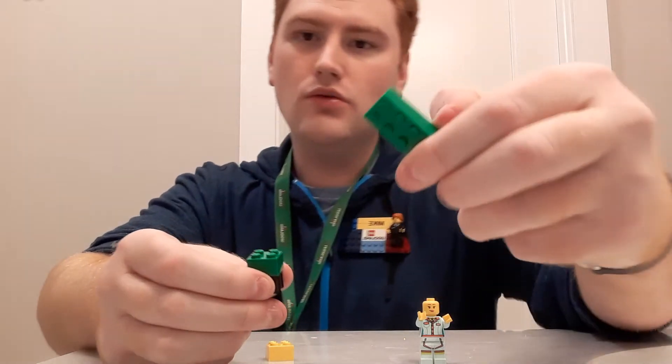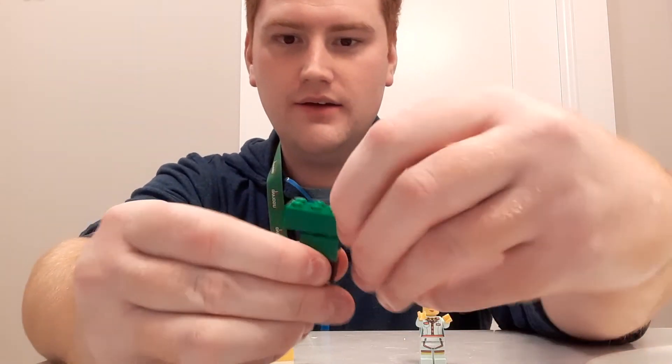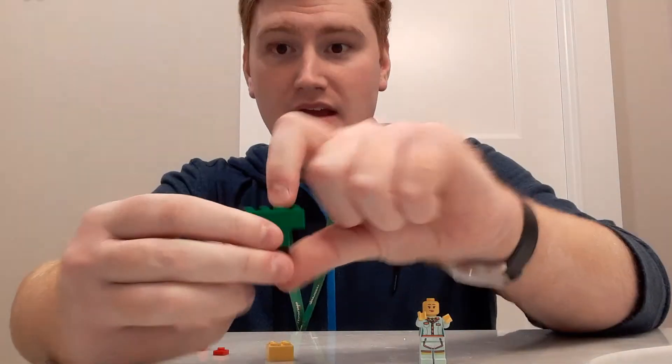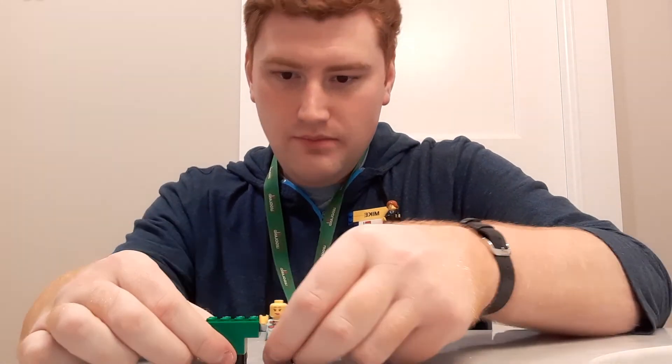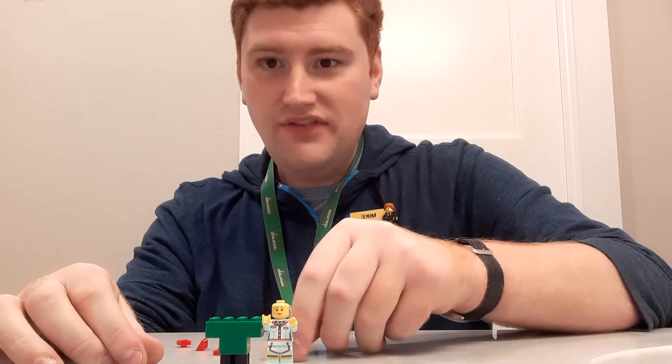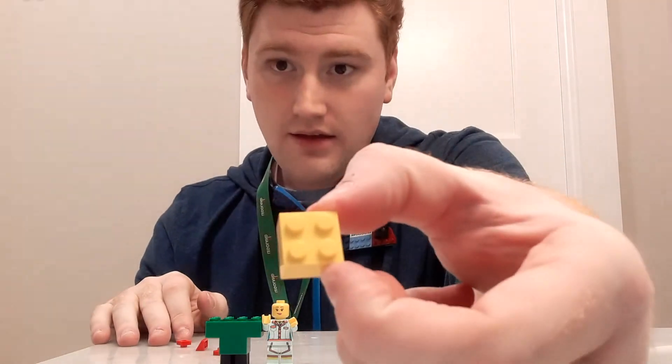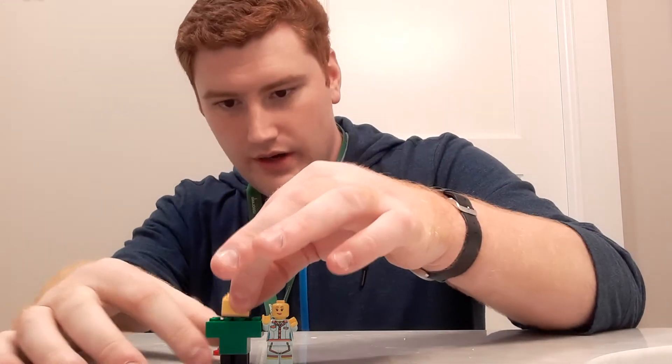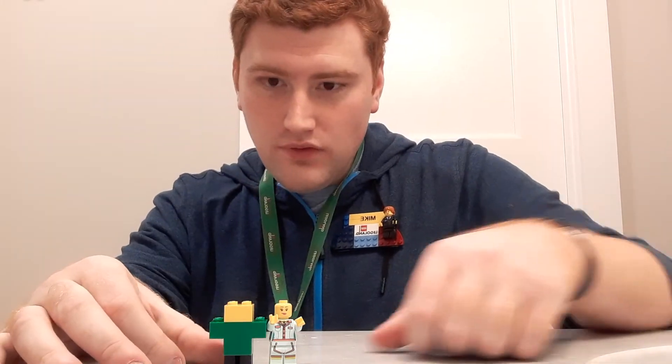We're going to take our reliable 2x4 brick, pop that on top, make a nice letter T right here. Then, Lego people, Lego minifigures, all have yellow faces. So, we have a yellow 2x2. We're going to pop that right on top.